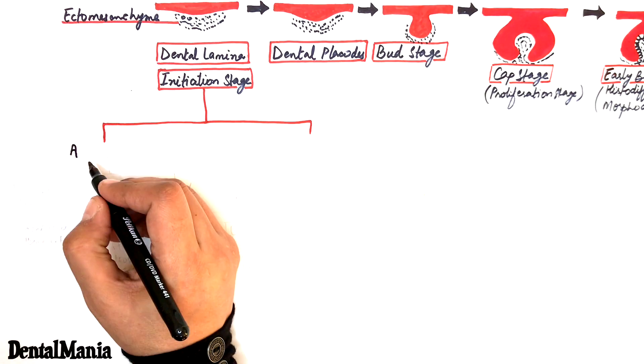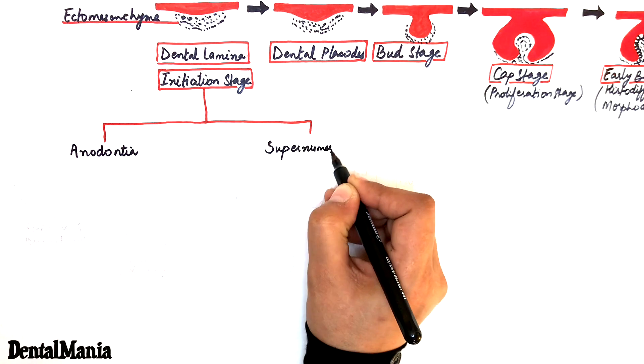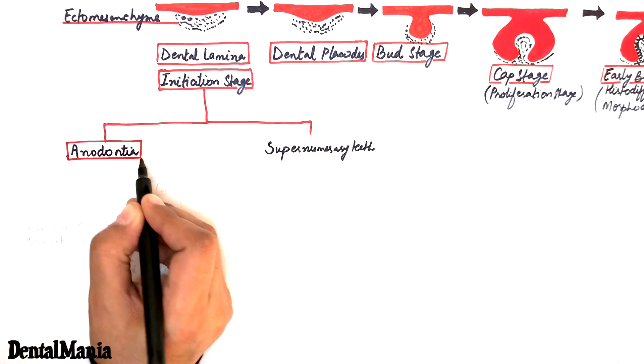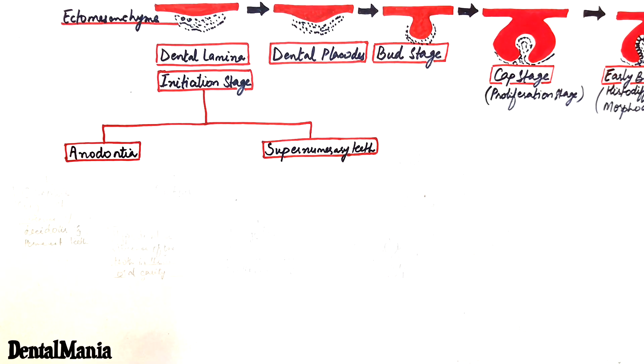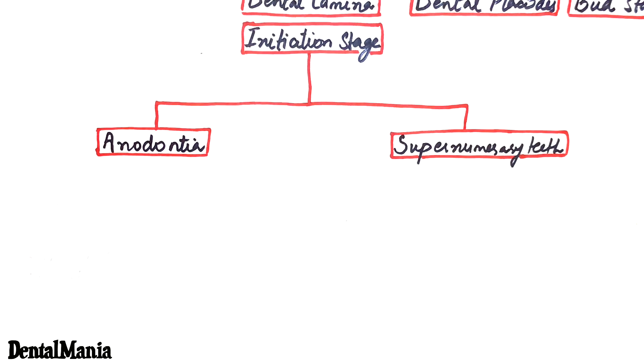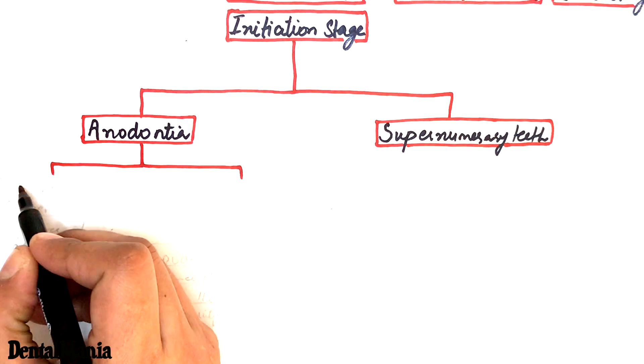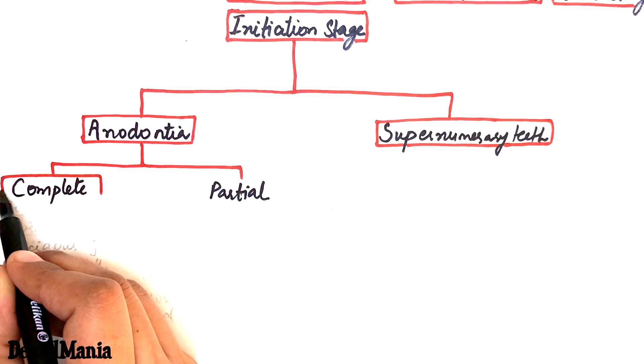The dental anomalies that might occur at the initiation stage are the anodontia and the supernumerary teeth. Anodontia is absence of teeth and is further divided into the complete anodontia and partial anodontia.